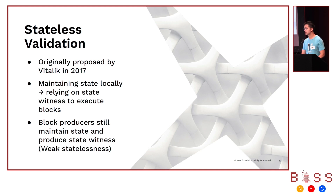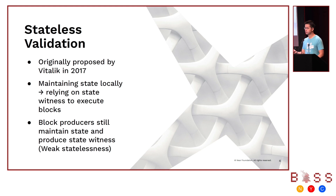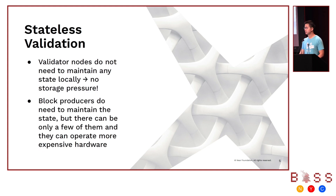The rough idea is that you have two types of consensus-participating entities. You have validators that don't need to actually maintain the state locally — they validate the state transition by using the state witness, which refers to pieces of state touched during execution alongside a proof that it belongs to the correct state root. Then you have block producers, who maintain the state locally, are responsible for producing blocks, and also produce the state witness so that validators can validate the state transition.